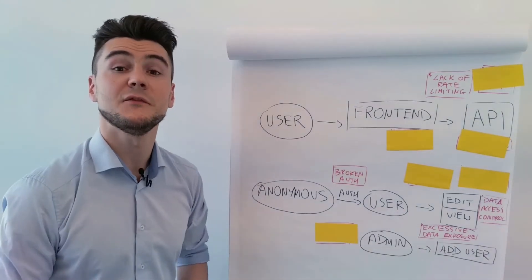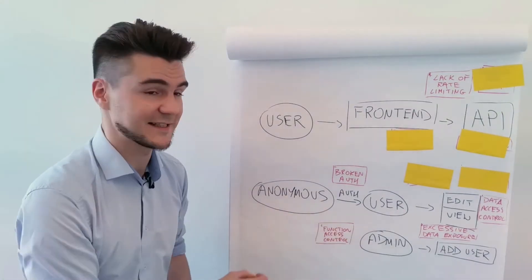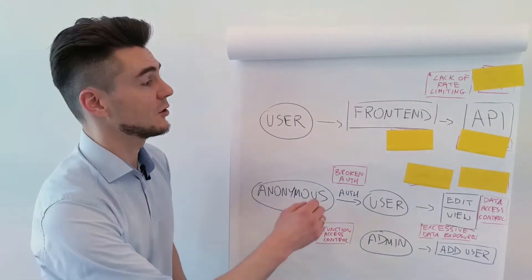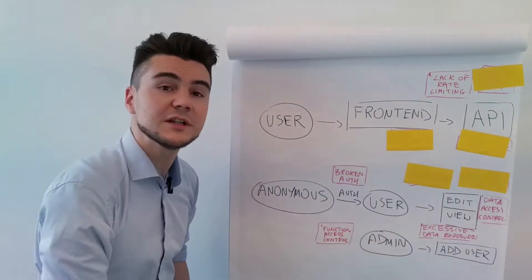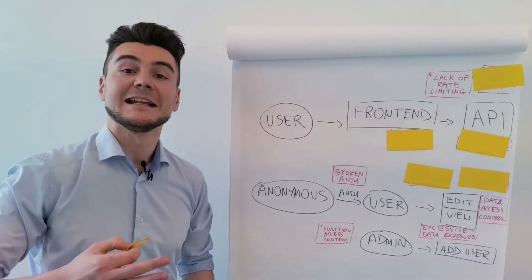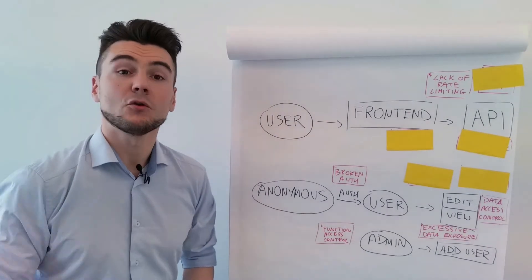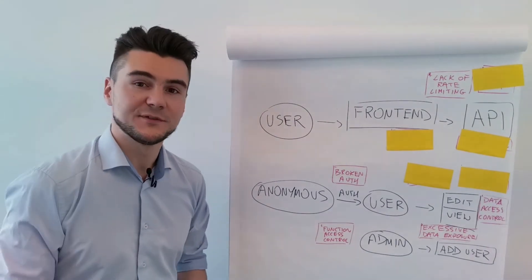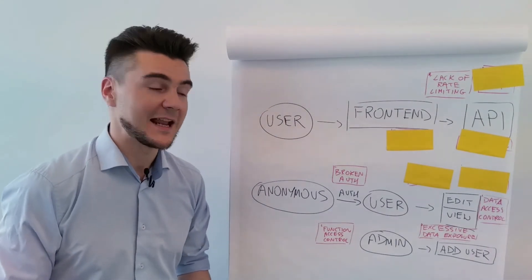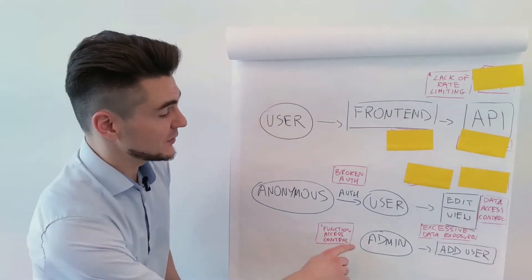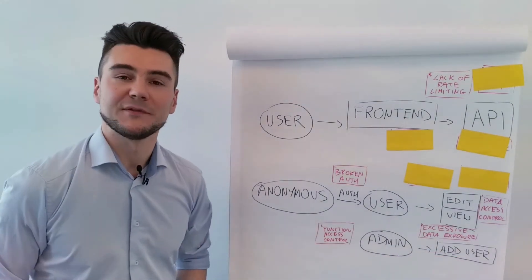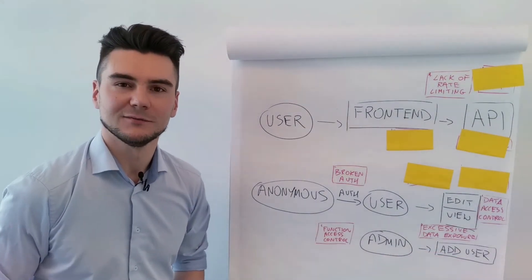Broken Function Level Authorization — my favorite one. A user that can only view invoices can edit them, or even better: a low-privileged user can execute an admin function to add a new user with an administrator role.